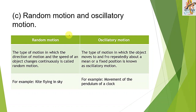Random motion vs. oscillatory motion. Random motion: the direction and speed of the object change continuously — example, a kite flying in the sky. Oscillatory motion: the object moves to and fro repeatedly about a mean or fixed position — example, the movement of the pendulum of a clock.